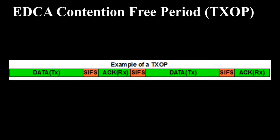EDCA contention-free period can be defined as the duration during which a station can send or receive data without contending for the medium. For example, in the case of DCF, the contention-free period starts with data and ends after receiving an ACK, so the contention-free period is effectively for one frame. EDCA allows this to be more than one frame, and this is called a TXOP — transmission opportunity.